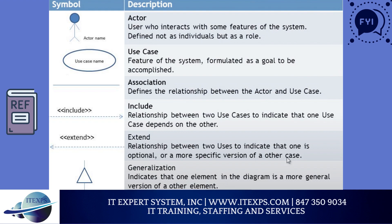For example, if a manager's name is John, that does not mean the actor representing him on the diagram needs to be named after him. Instead, that actor must be labeled after his manager role. Next is the use case symbol, one of the most important symbols. It's drawn as an oval shape and represents a feature of the system, formulated as a goal to be accomplished, for example, booking a flight. Moving on to association, which is drawn as a straight line — it defines the relationship between an actor and the use case, indicating that there is an interaction happening between them.